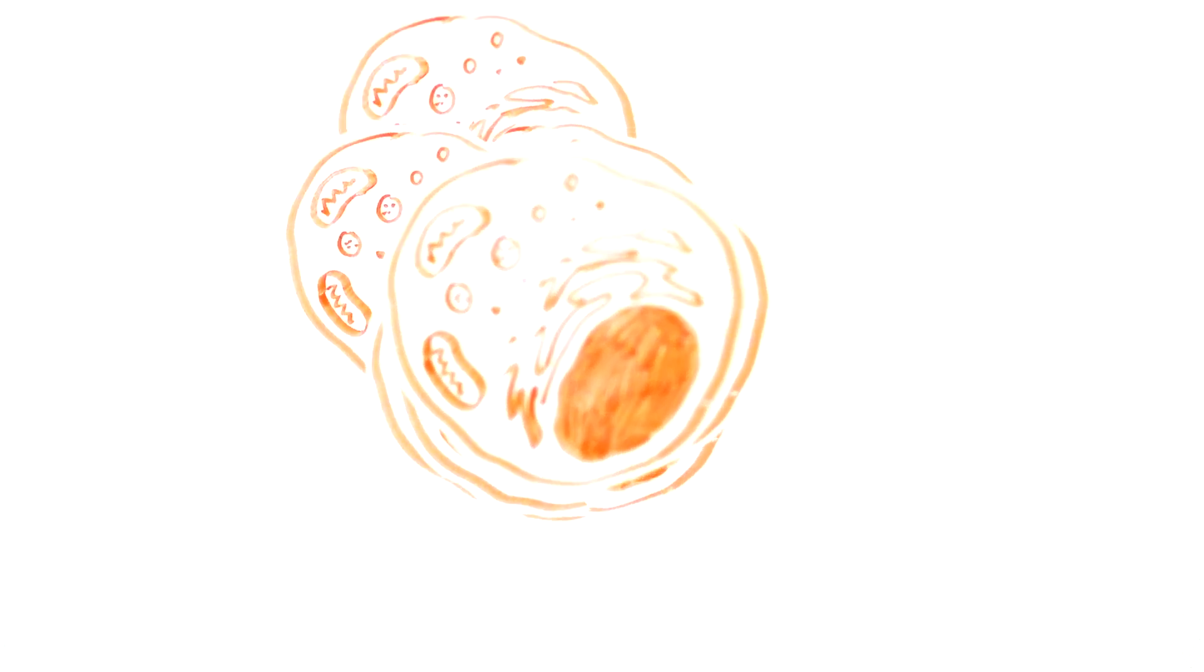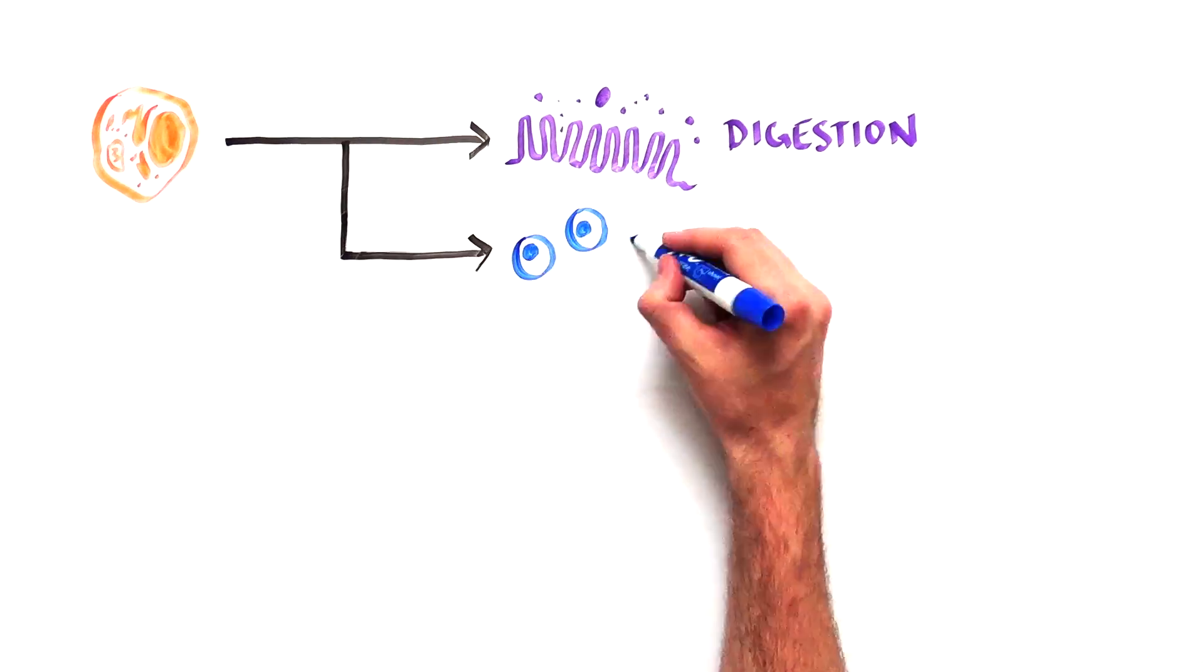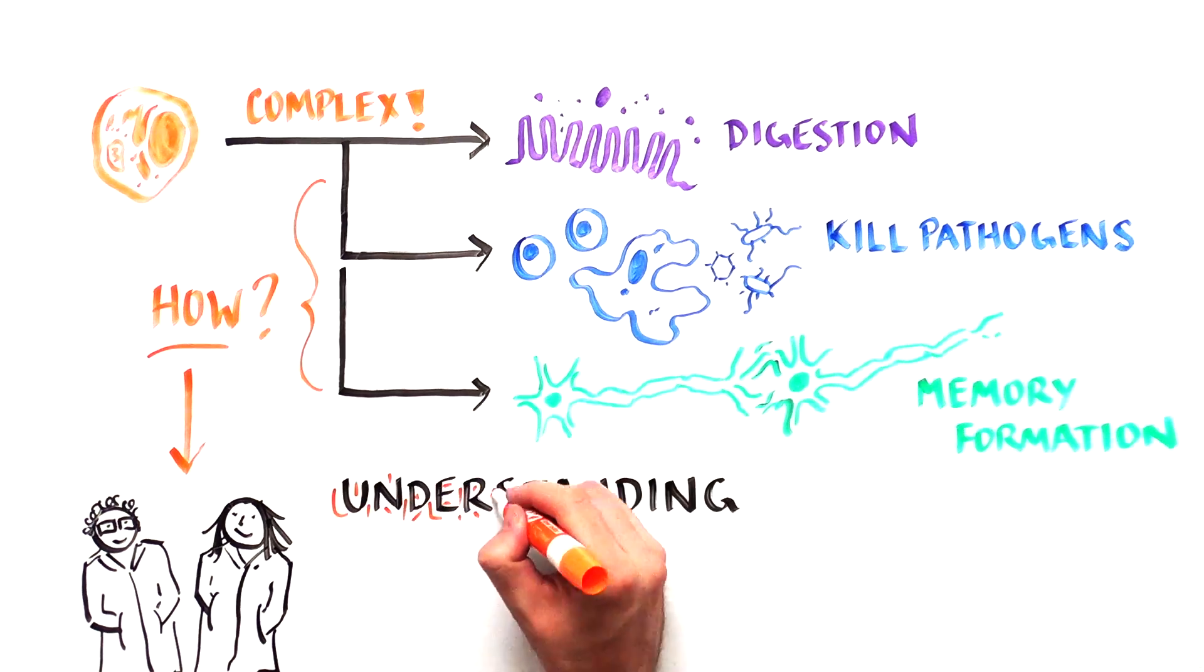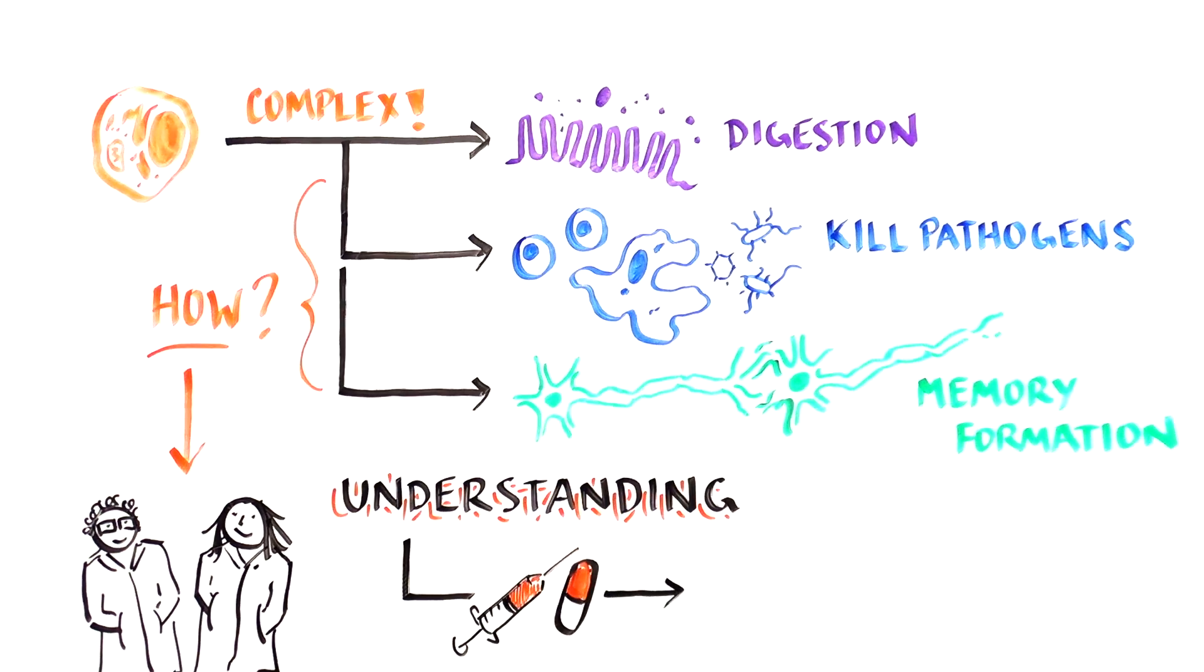The process by which one cell makes 35 trillion cells that do everything from digesting food to killing pathogens and creating memories is a complex one. But understanding this process is helping scientists treat disease.